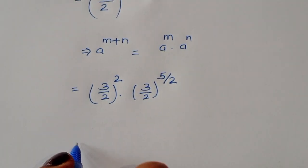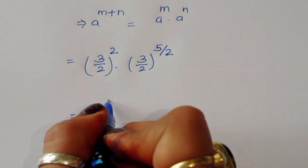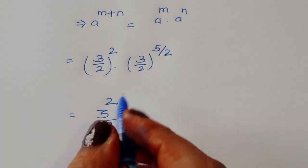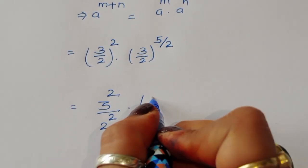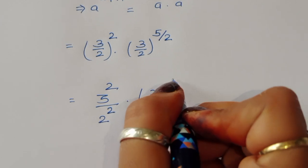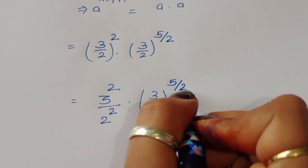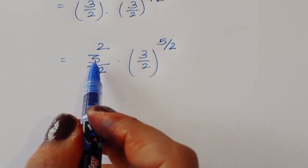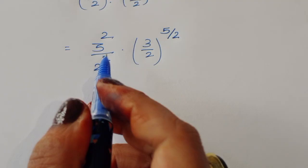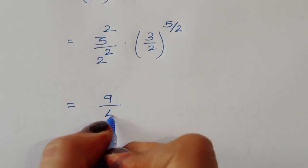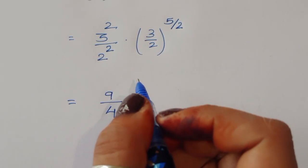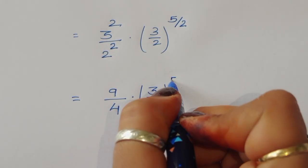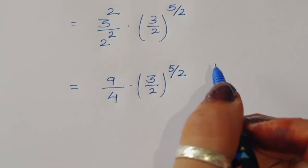For (3/2)^2, we separate the power: 3^2 upon 2^2. Now 3 power 2 is 9 and 2 power 2 is 4, so (3/2)^2 = 9/4. Therefore the expression becomes 9/4 times (3/2)^(5/2).